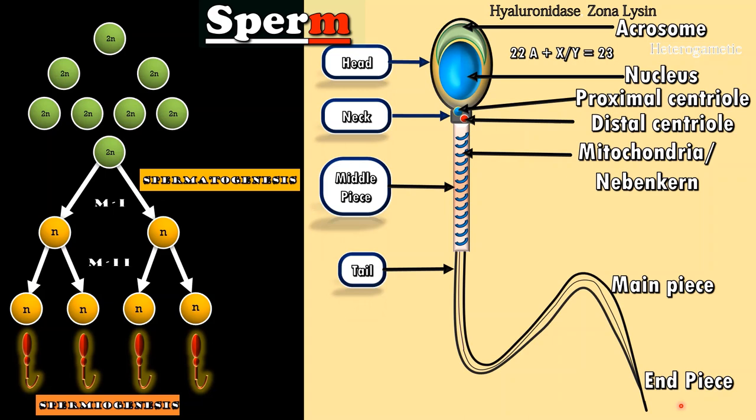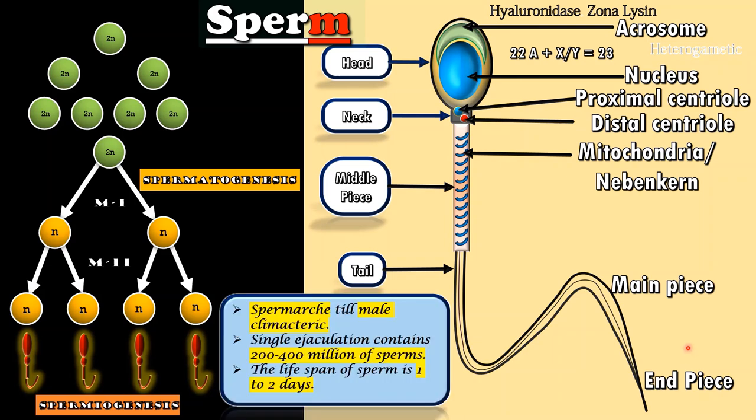In human males, sperm production is a continuous process from sperm menarche till male climacteric. The single ejaculation contains 200 to 400 millions of sperms. The lifespan of sperm is one to two days.